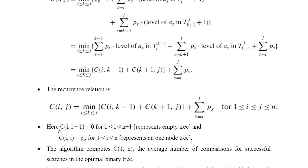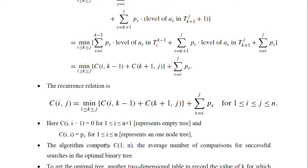The initial conditions for this recurrence relation are: C(i, i-1) represents an empty tree, so no comparisons are needed — it equals 0. C(i, i) represents a one-node tree requiring only one comparison, so it equals the probability pi. That is, pi into 1 is pi. So the initial conditions are C(i, i-1) = 0 and C(i, i) = pi.